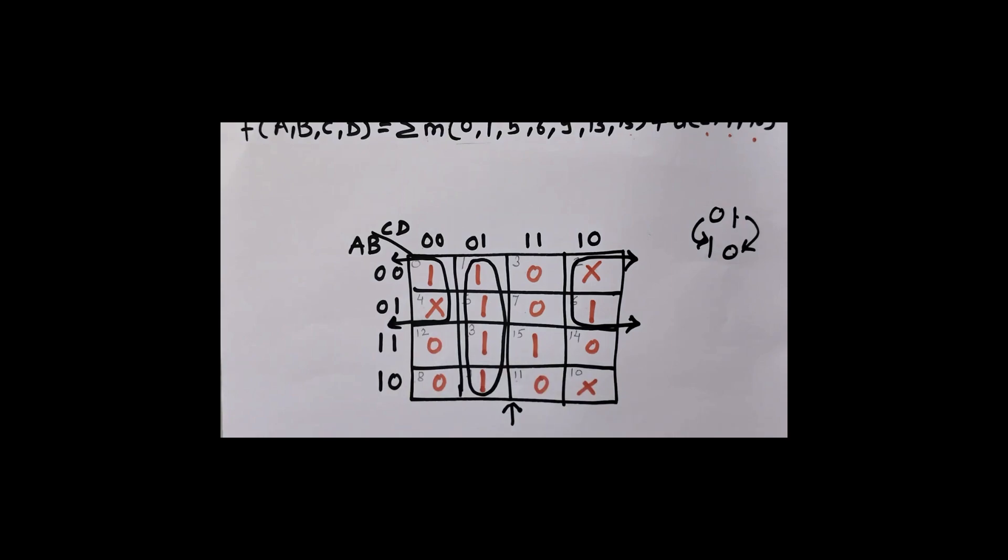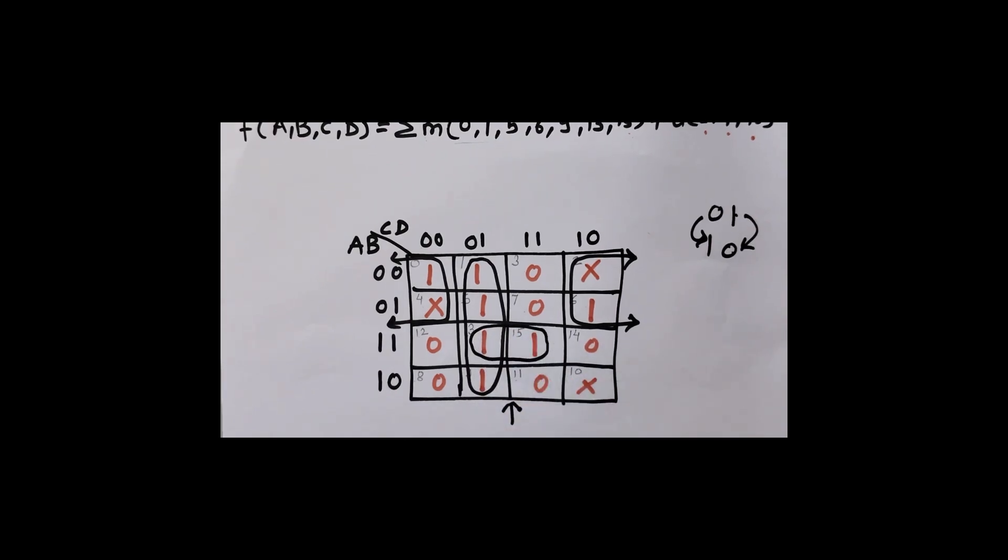Now what is remaining? This don't care is remaining and this 1 is also remaining. But don't care we will not consider, we will consider it as 0. But for this 1, first step is to check any adjacent 1 or overlapping 1. Here I have this adjacent 1. If there is another 1, then what we can do? Instead of using this 1, I could have used this 1 because this is already used. But now we don't have any another 1, so I will make group of these 2 ones which is called as pair.